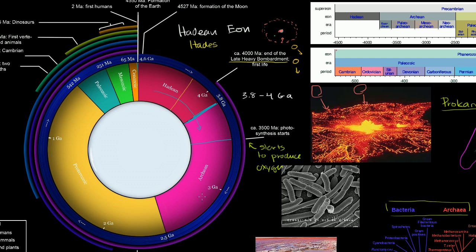We enter into the Proterozoic Eon, which is right over here. The Proterozoic Eon starts about 2.5 billion years ago. Proterozoic comes from the Greek for earlier life.